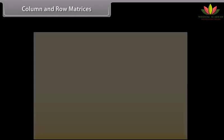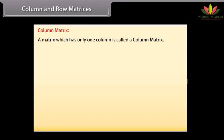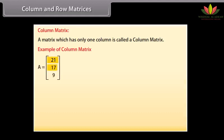Column and row matrices. Column matrix: a matrix which has only one column is called a column matrix. For example, A = [21, 17, 9] (column-wise). This matrix has three rows but only one column, so it is a column matrix. Its order is 3 by 1.